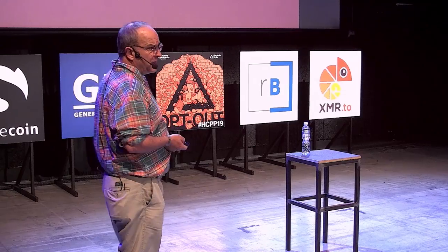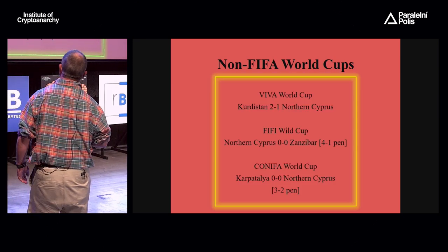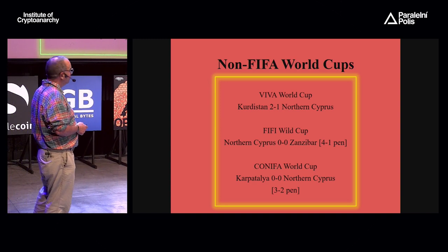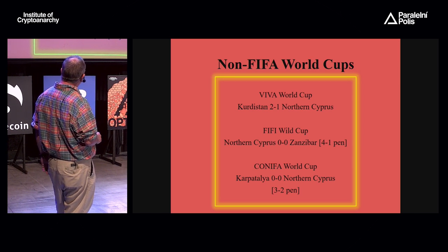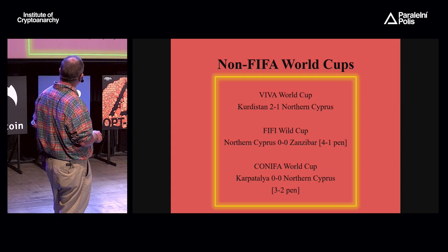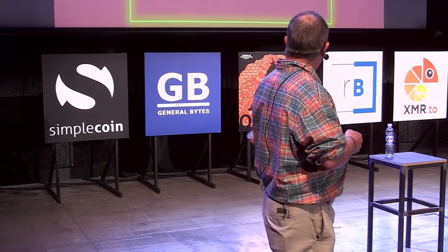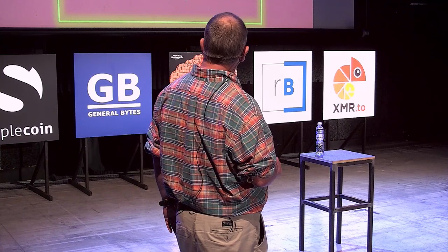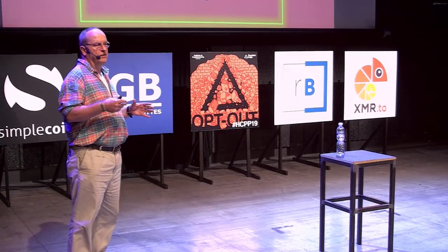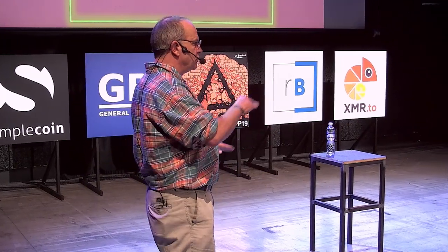In sporting terms too, there are a number of non-FIFA World Cups. There's a Viva World Cup, currently held by Kurdistan, which beat Northern Cyprus 2-1 in the final. There's a Fifi Wild Cup, also held by Northern Cyprus. And perhaps the biggest is the Konifa World Cup, played out earlier this year, where Northern Cyprus lost 3-2 on penalties in the final to Carpataglia, a splinter of what most people know as Hungary. There are lots of these parallel organisations for non-countries.